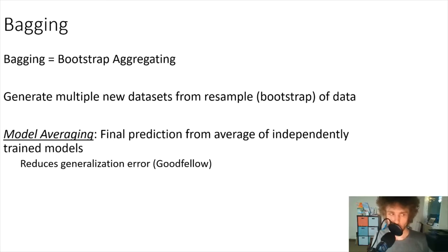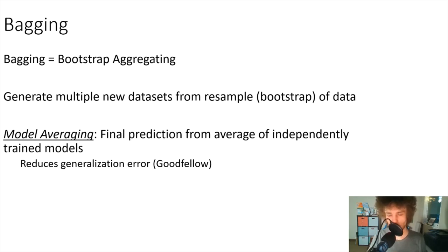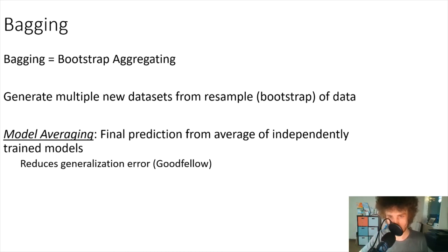We're going to talk about bagging first. Bagging is short for bootstrap aggregating. If you're not familiar with bootstrapping, it's the idea that from a single dataset you create a bunch of new datasets by sampling from the original with replacement. You might make a thousand bootstrap samples — randomly picking data points, allowing repeats, to generate random datasets. This is widely used for generating confidence intervals and estimating model performance ranges.